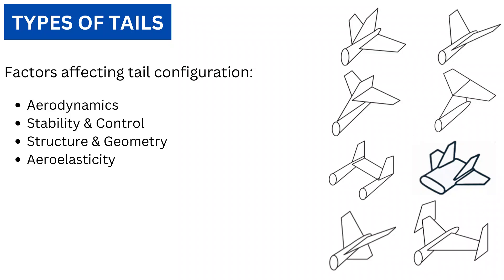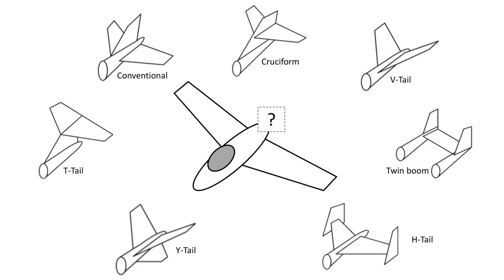In this video, we saw that the major factors affecting tail configuration are aerodynamics, stability and control, structural layout, and aeroelasticity. If you found this video informative, please like it and subscribe to the channel. You can check out these videos next for more information on aircraft design. Thank you for watching.